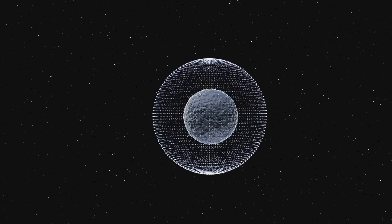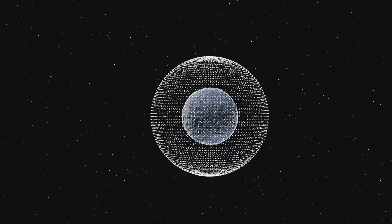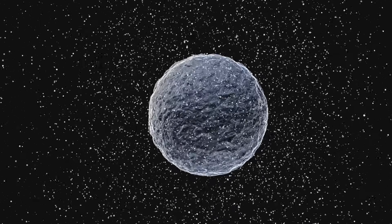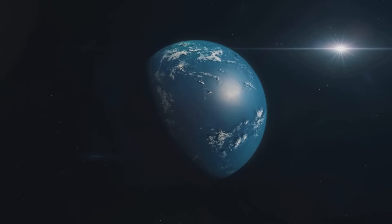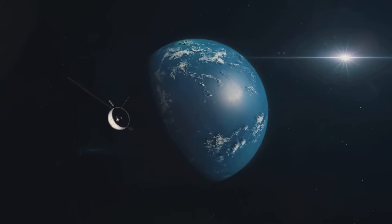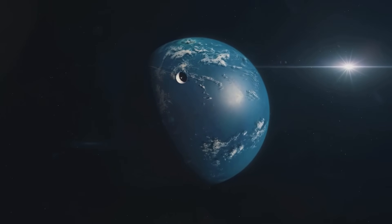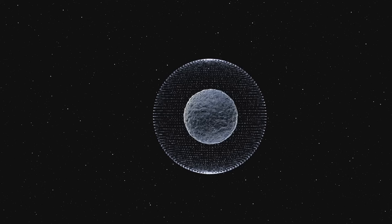However, just because a planet is in the habitable zone doesn't necessarily mean it's habitable. A variety of factors come into play, such as the planet's atmosphere, its size and its composition. For instance, a planet might be in the habitable zone, but if it's a gas giant like Jupiter, it's unlikely to support life as we know it.